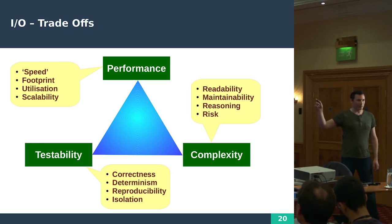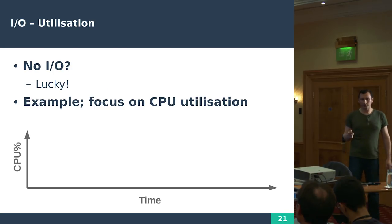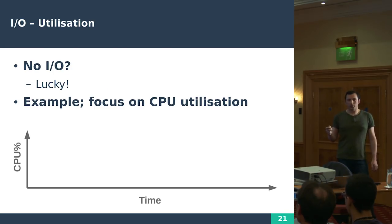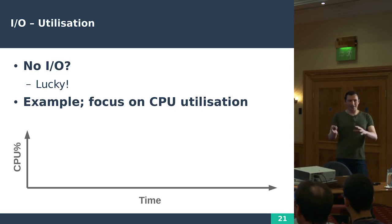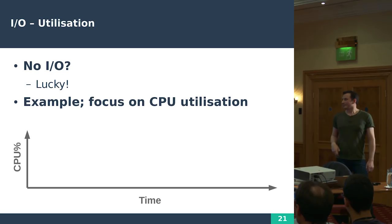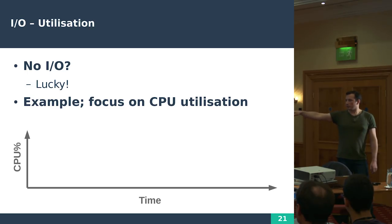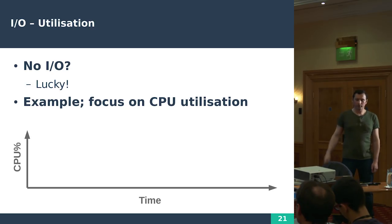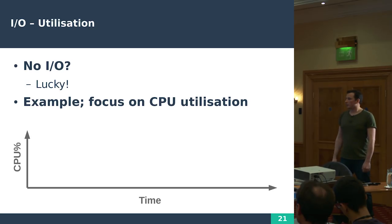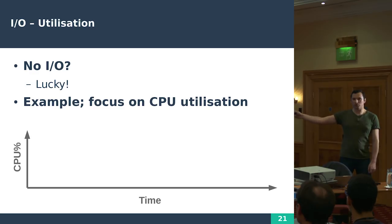The one I'm going to focus on is utilization. If you have a software program that doesn't do any I/O — all it does is take some data and calculate some new data — then you're lucky, because it's very easy. We're going to focus on CPU utilization. I have this little graph showing CPU usage over time, the sort of thing you might get out of a monitoring system.